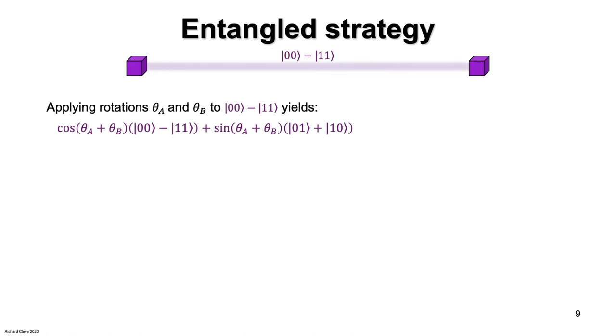Notice that ket 0, 0 and ket 1, 1 correspond to measurement outcomes a, b where a XOR b is 0, and ket 0, 1 and ket 1, 0 correspond to outcomes where a XOR b is 1.